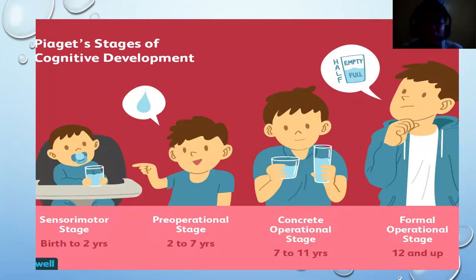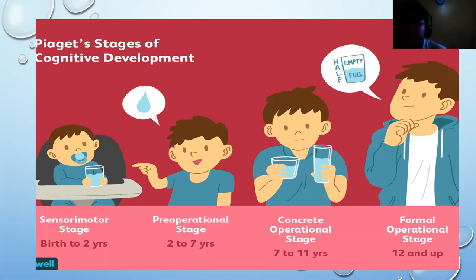A good example for cognitive development: in the sensorimotor stage, a baby has learned to hold a glass. In the pre-operational stage, the child learns to identify water. In the concrete operational stage, the child understands the level of water and can measure it and differentiate the types of containers. In the formal operational stage, the person has an idea of the appropriate dosage of water to drink.